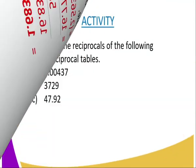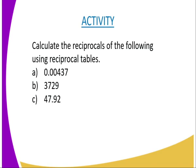And that is the overall answer. We have come to the end of today's lesson. I hope you have followed. And I'm going to give you the following question as an assignment. The question reads, you are supposed to calculate the cube, not the reciprocal. There is an error there. You are supposed to calculate the cube of the following using the cube tables. So you are supposed to calculate the cube of 0.00437 and the cube of 3729 and also the cube of 47.97 using the cube tables.